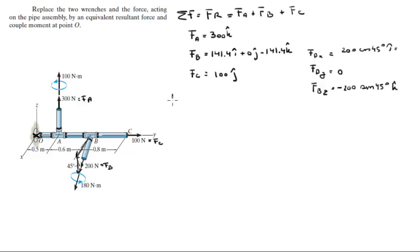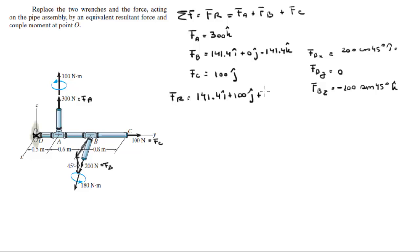To find F_R, add the i's with the i's, the j's with the j's, and the k's with the k's. F_R equals 141.4i plus 100j plus 158.6k.